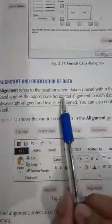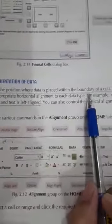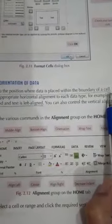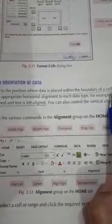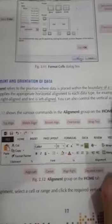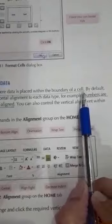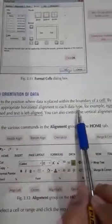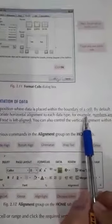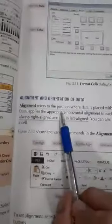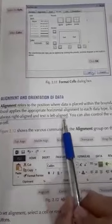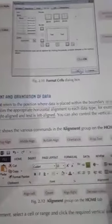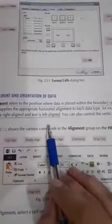Alignment refers to the position where data is placed within the boundary of a cell. By default, Excel applies the appropriate horizontal alignment to each data type. For example, numbers are always right aligned and text is left aligned. This is important when you enter data.